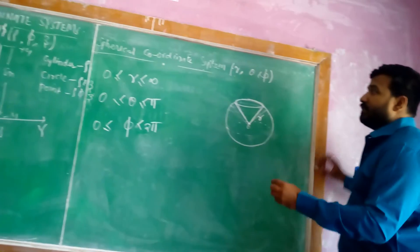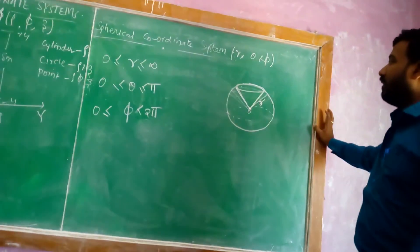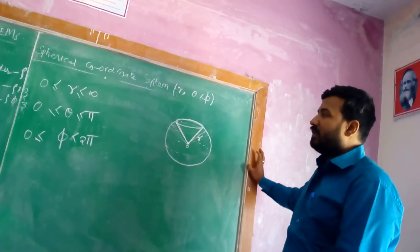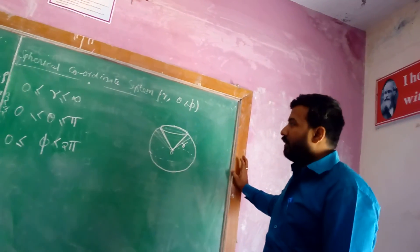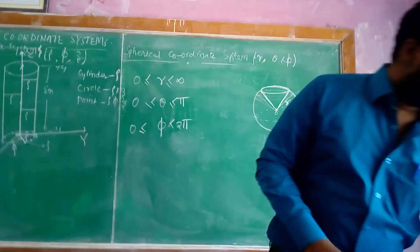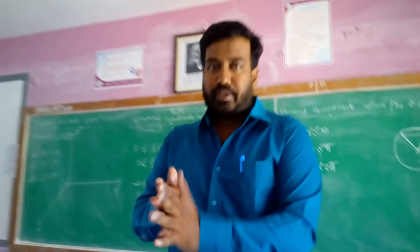So these are the three coordinate systems: Cartesian, cylindrical, and spherical, along with their coordinates and ranges. Thank you — hopefully this session was useful for you.